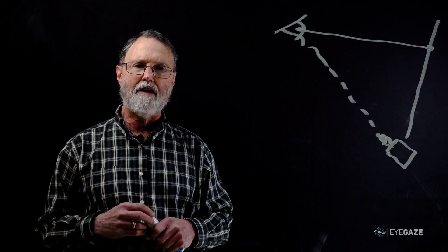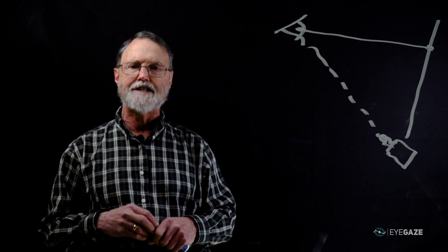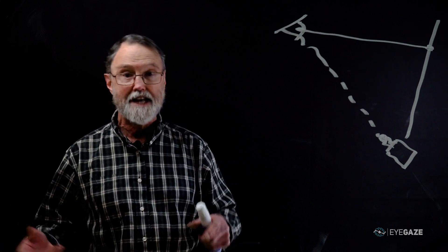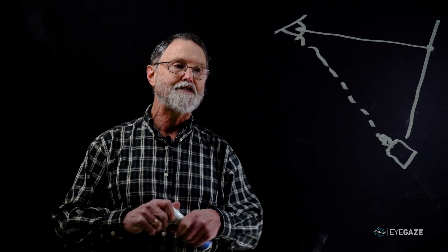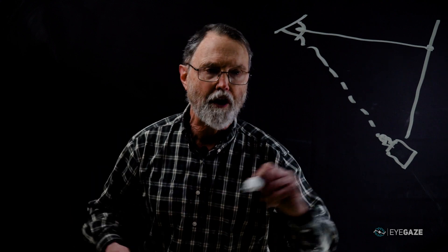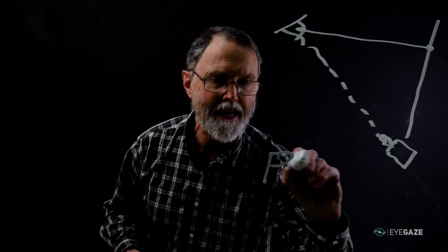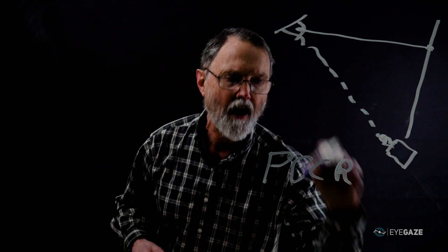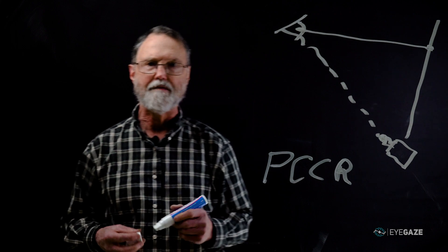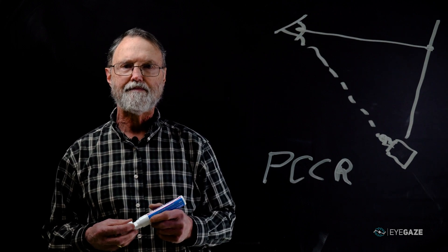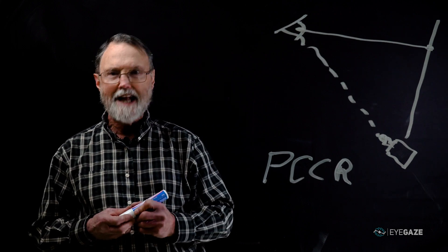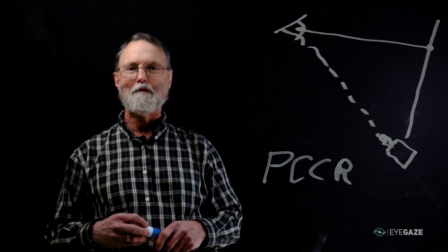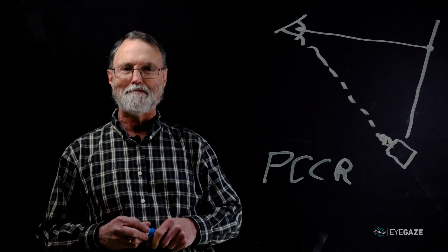This method of calculating the gaze is called, as you might guess, the pupil center corneal reflection method — PCCR for short. And that's how eye tracking works. Have fun playing with an eye tracker.